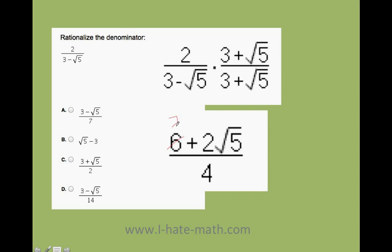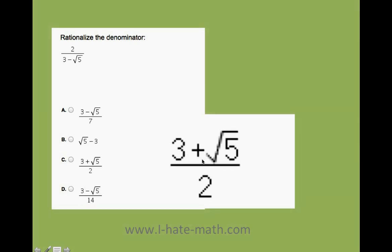6 divided by 2 equals 3. 2 divided by 2 is just 1. I don't touch the square root. And then 4 divided by 2 is just 2. Awesome. I just see my answer: equals 3 plus the square root of 5 over 2. And voila, we have it right here. It's number C.